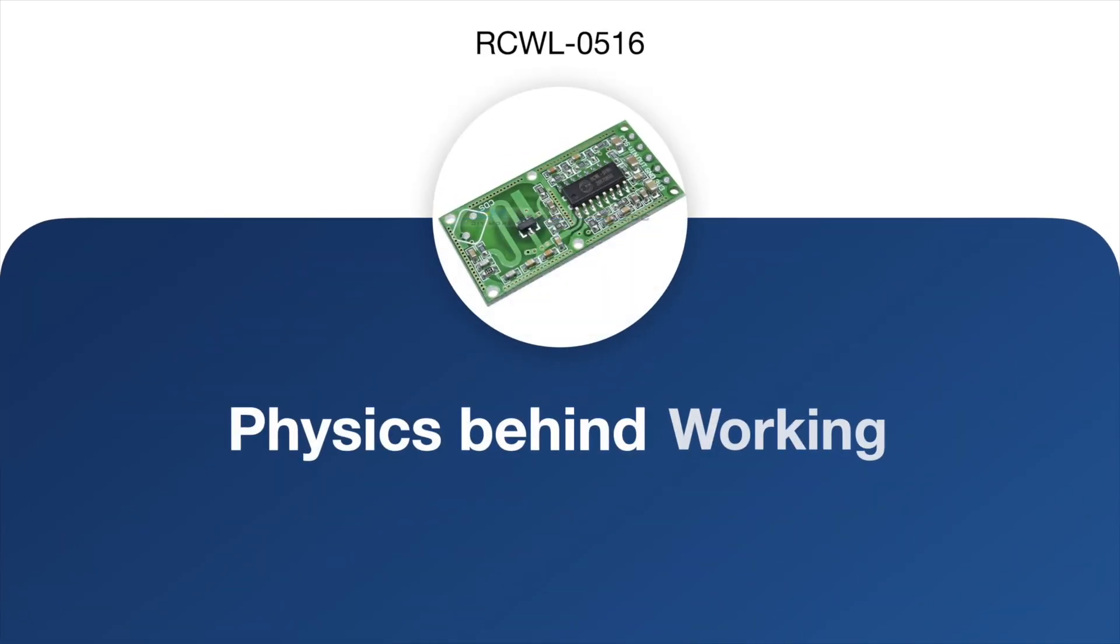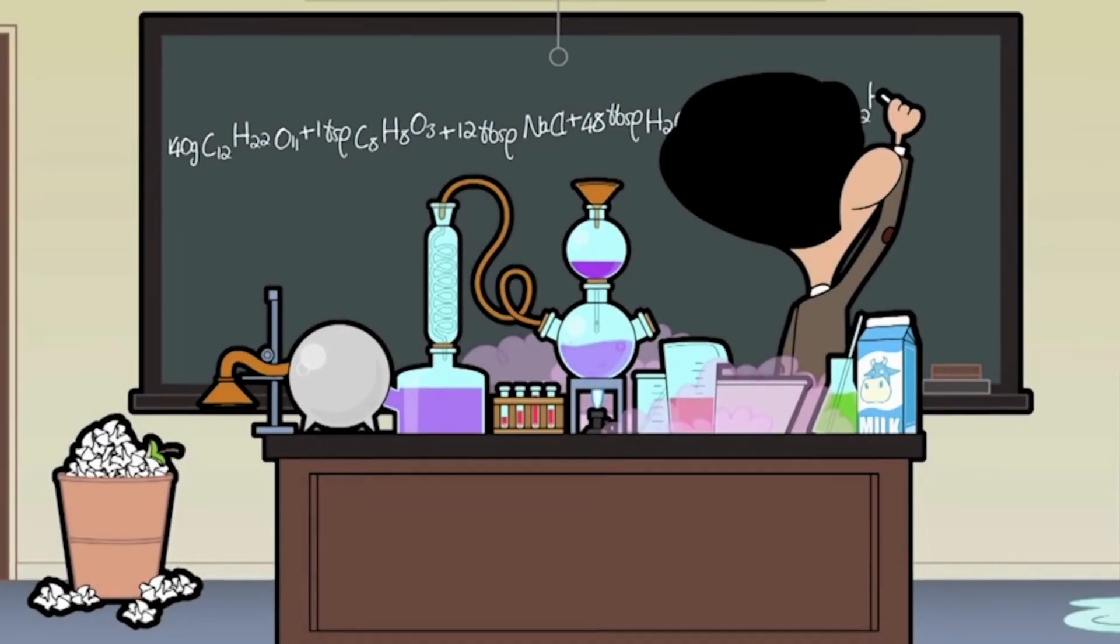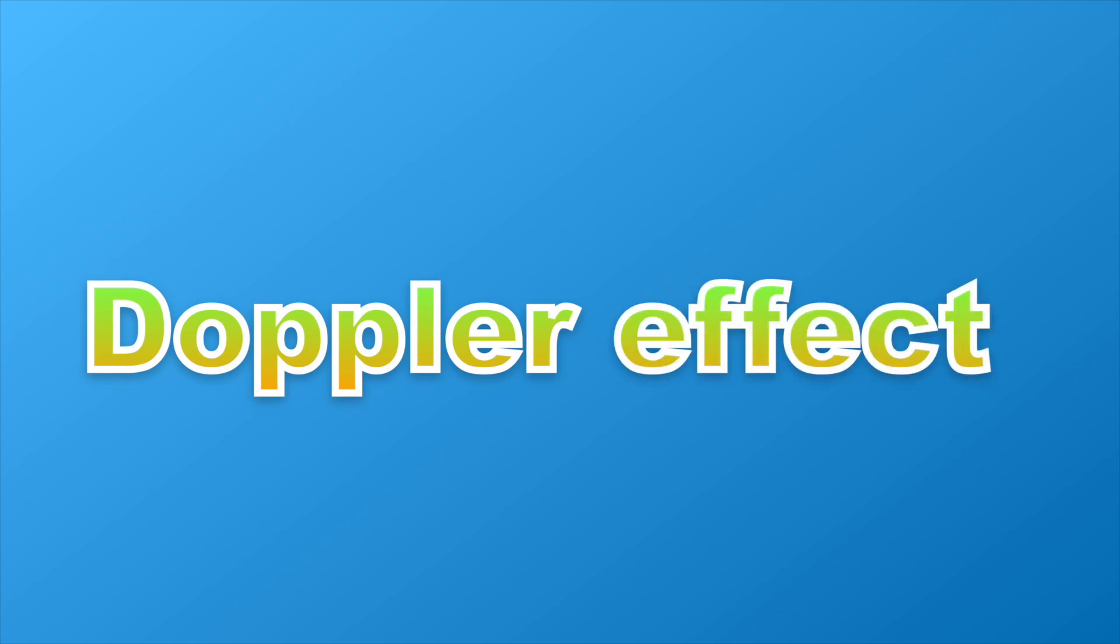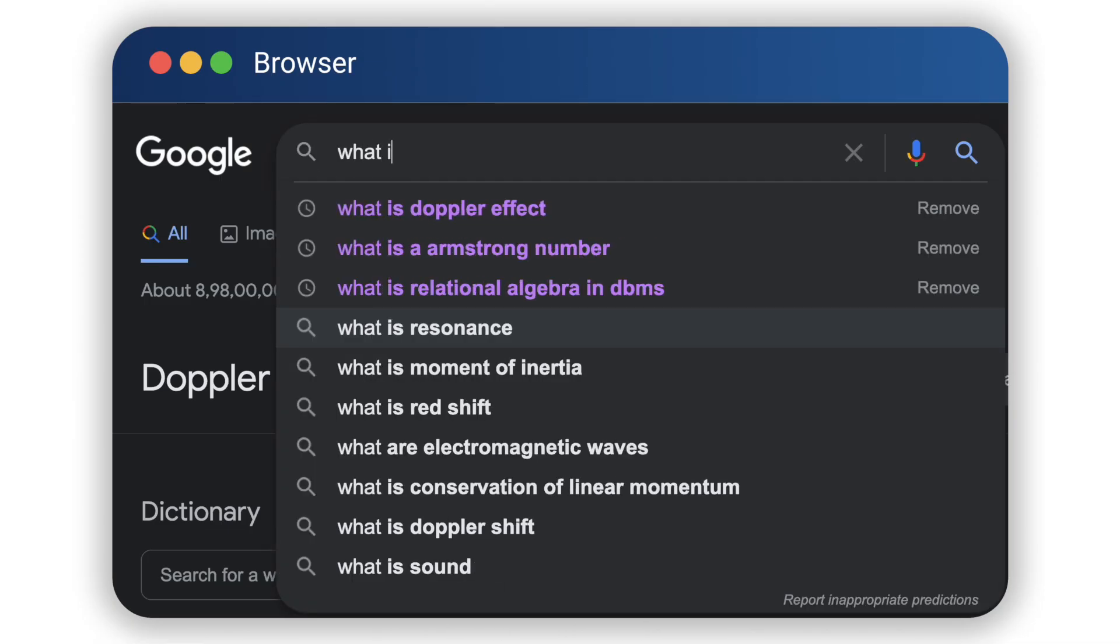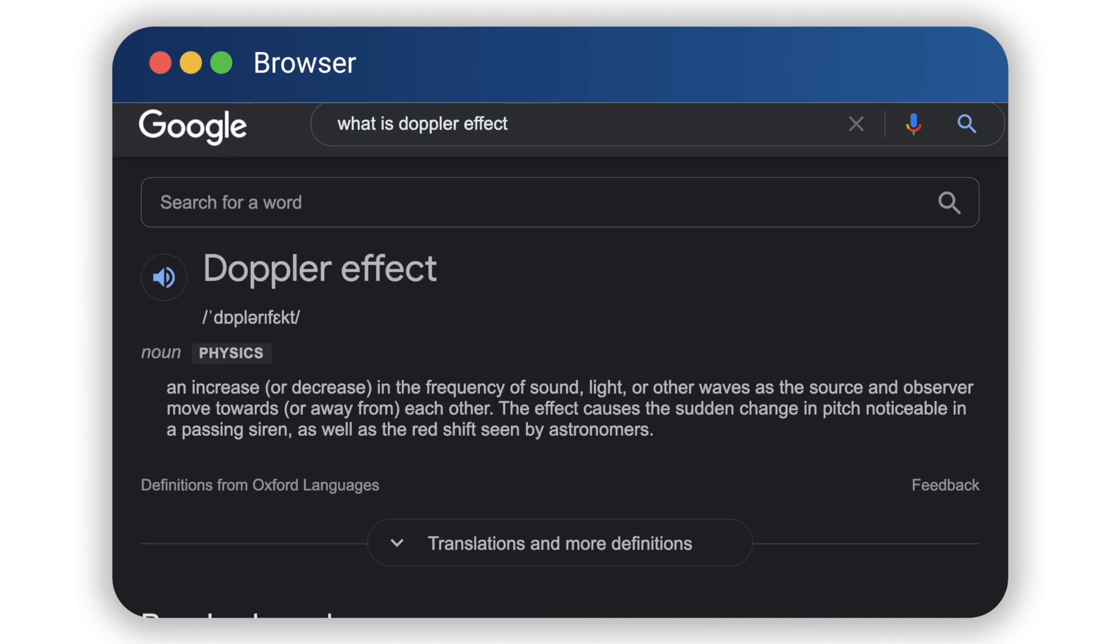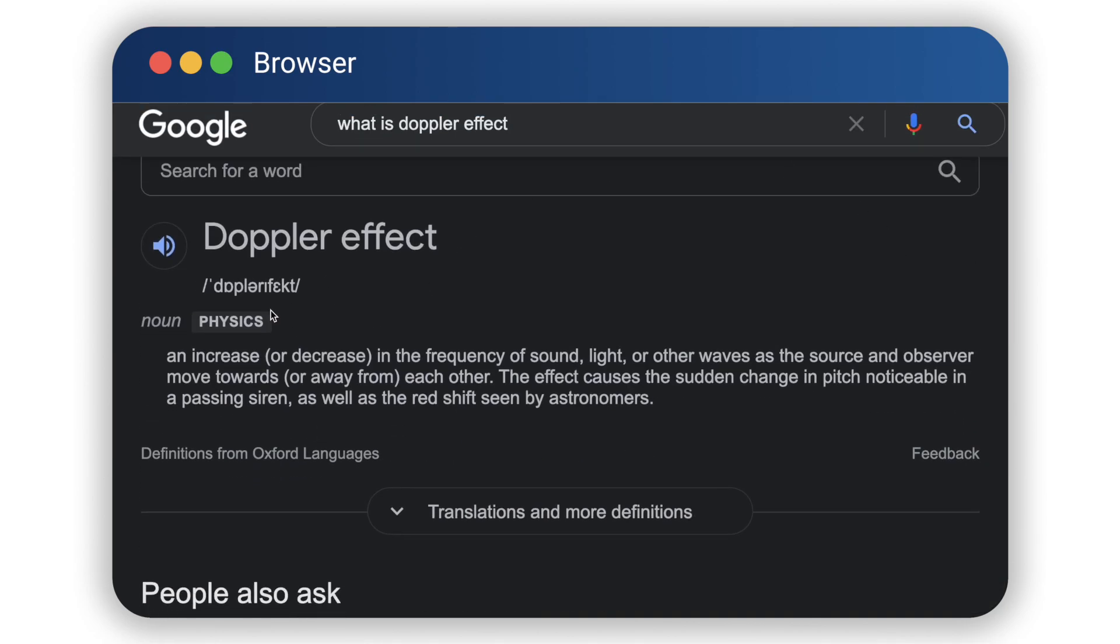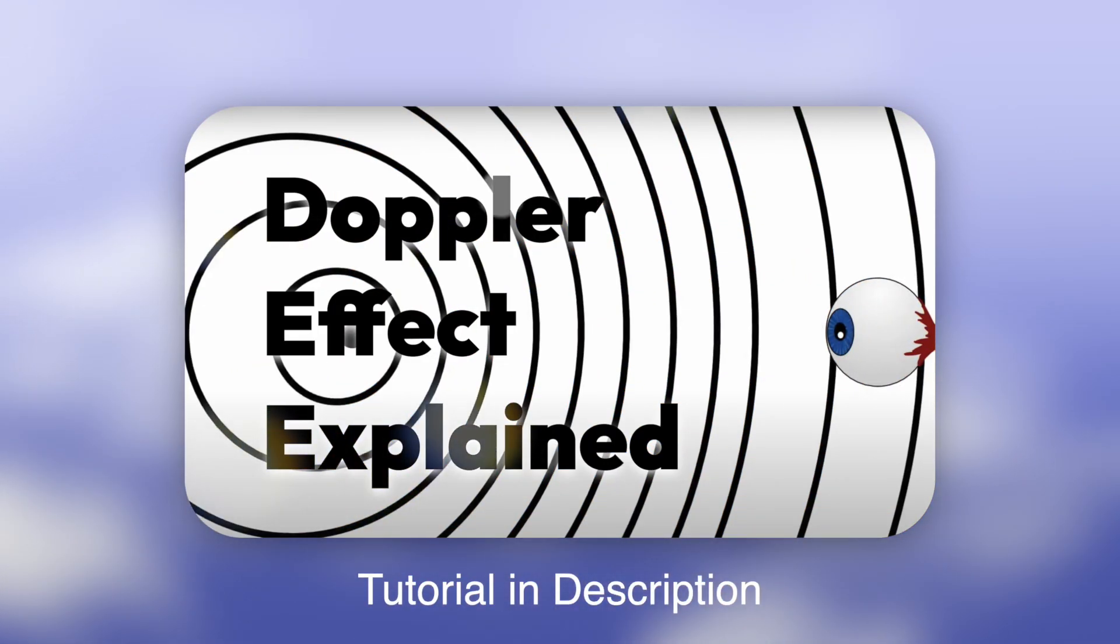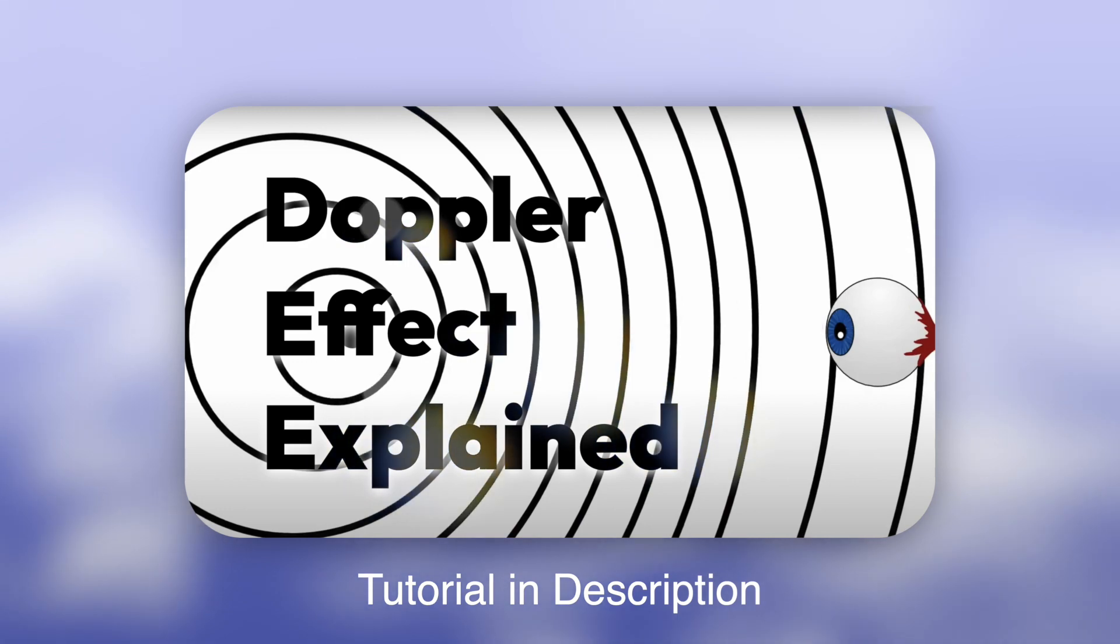Next up is the physics behind the working of this sensor. Now I am not a physics professor to explain the phenomenon in detail, but I will try to give a rough small idea. Basically, this sensor works on the principle called the Doppler effect. Now what is this Doppler effect? If we google search this, we get some interesting results. Well, I am not going to sit reading this, but instead I will link a tutorial in the description if you are interested.